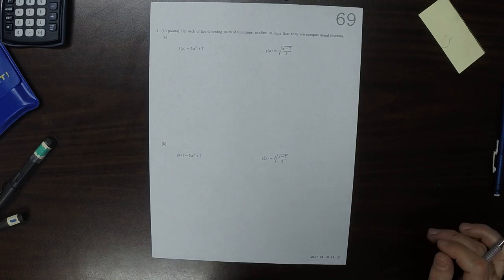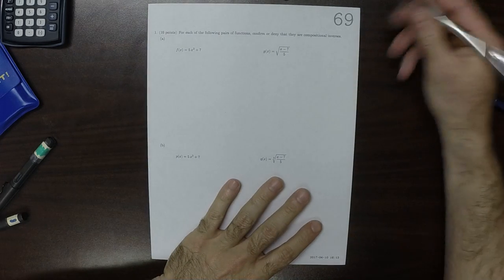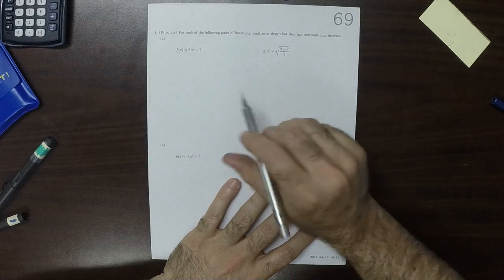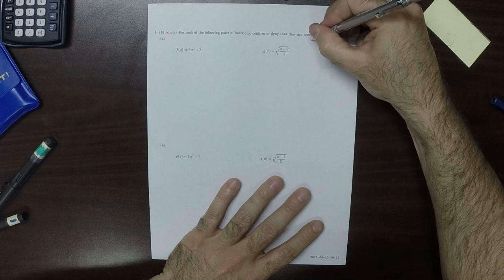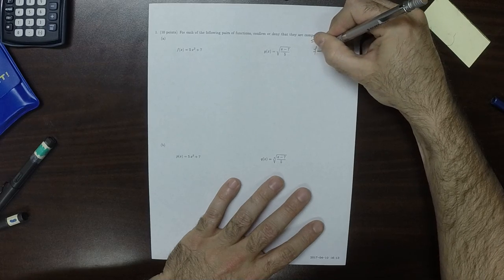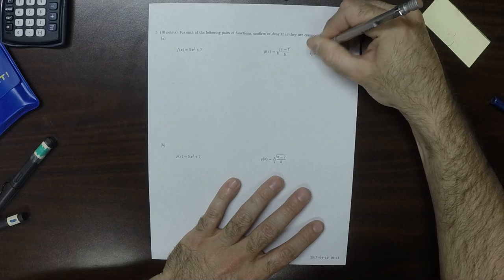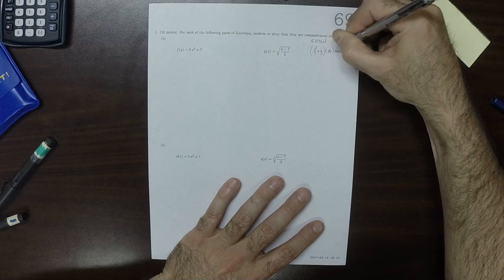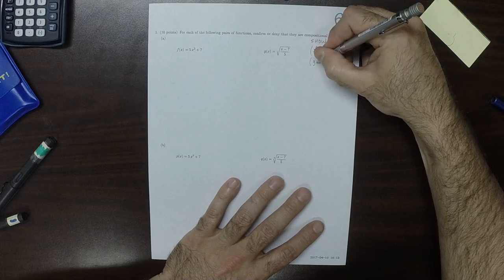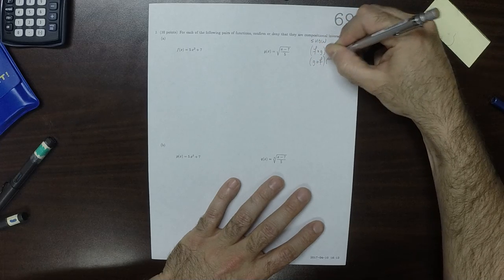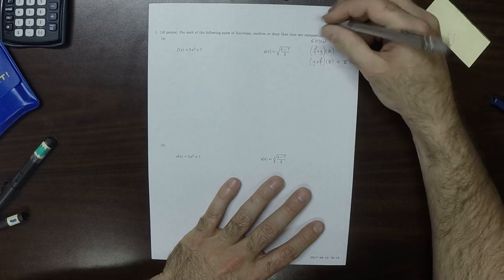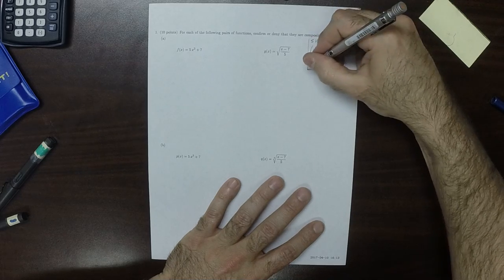This is the solution to written homework 69. So as a reminder, what it means to show that a pair of functions are compositional inverses is that we must show that f circ g evaluated at x is x, and also g circ f evaluated at x is x. So that's what we must show.